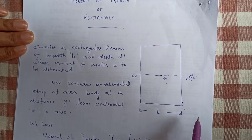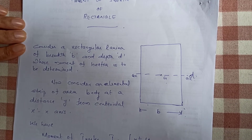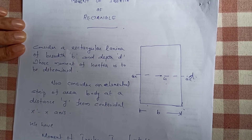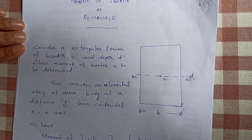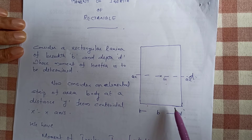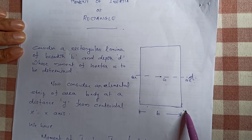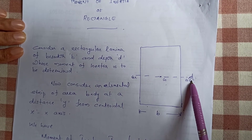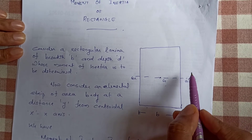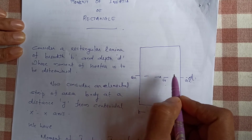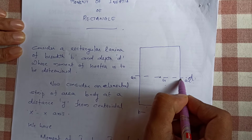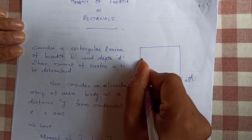As we start the moment of inertia, we need to take the centroidal axis. We can integrate the moment of inertia. So let's start with the rectangular lamina of breadth B and depth D. Consider an elemental strip at a distance y from the centroidal x-axis. This is the y distance.